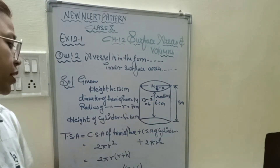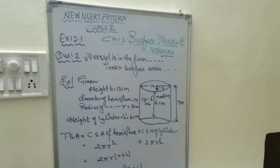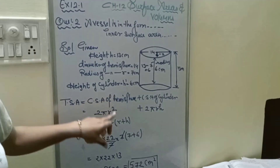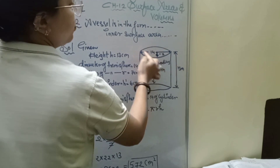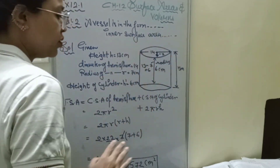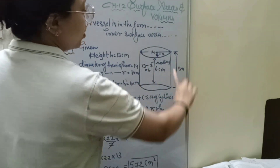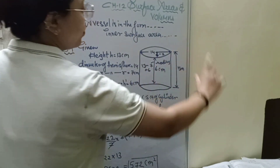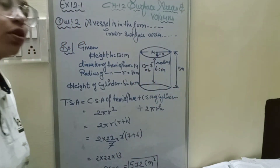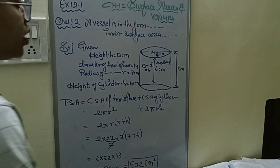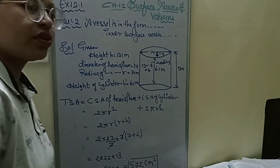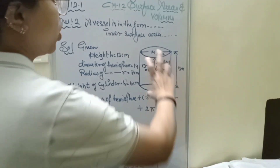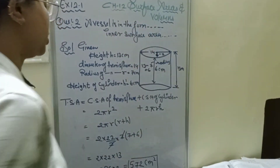The height of the cylinder is 6 cm. We find the curved surface area of the hemisphere plus the curved surface area of the cylinder. Both curved surface areas together give us the total required inner surface area.